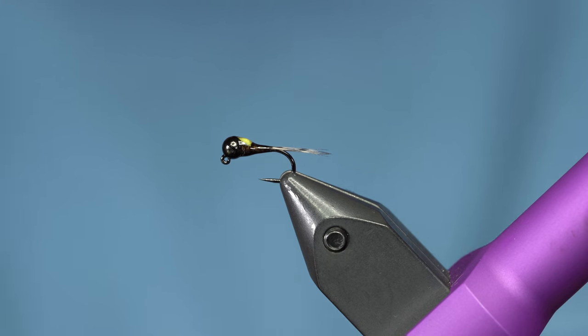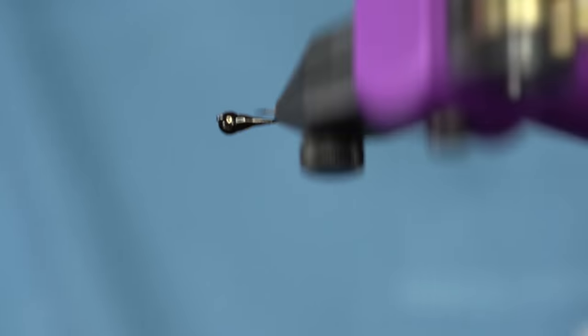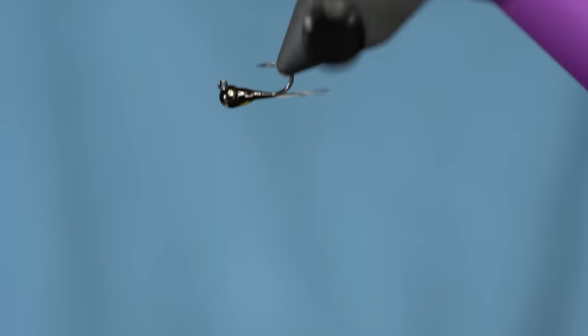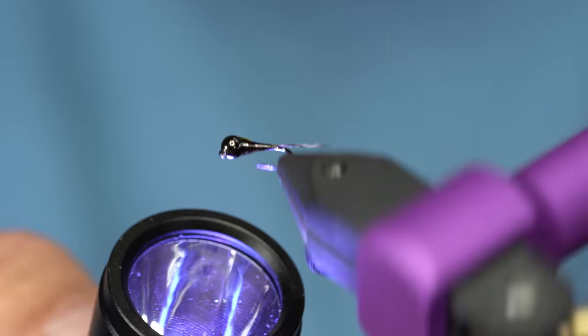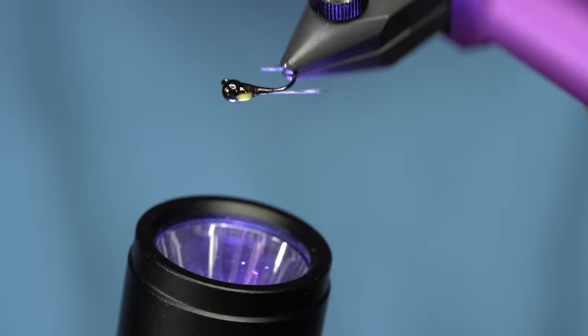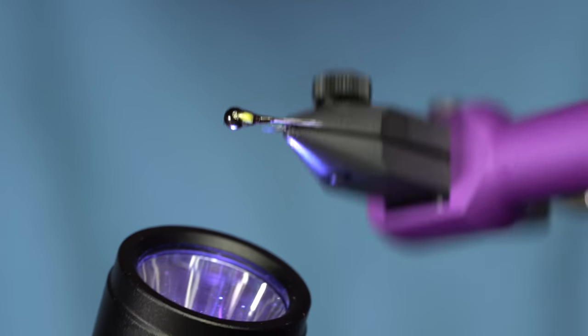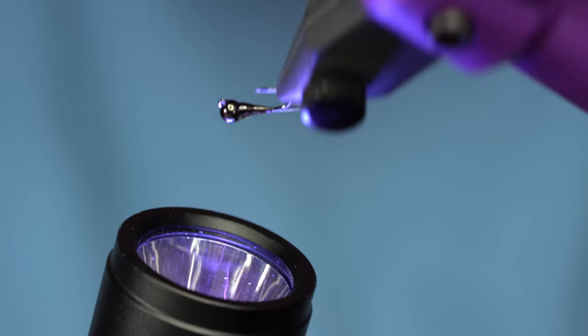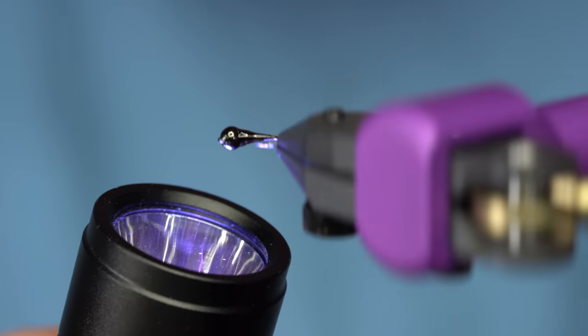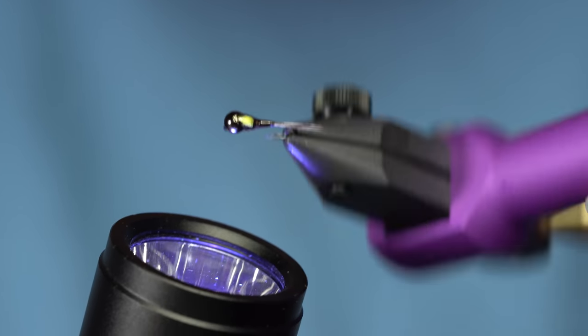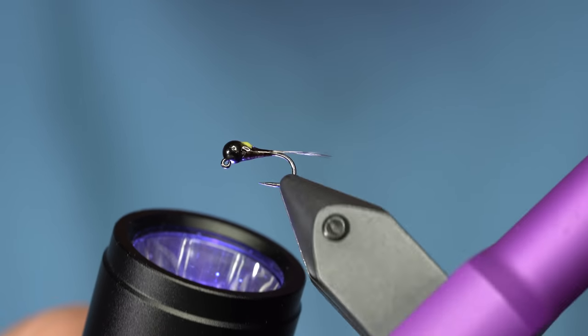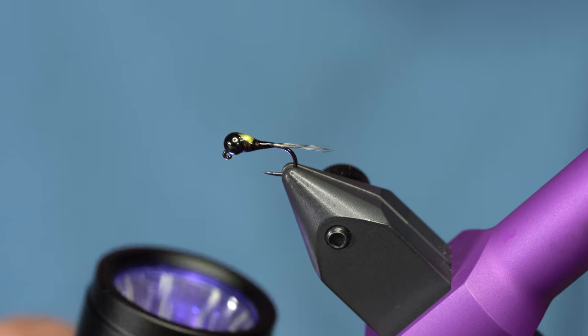So anyway, that's called the Code Cracker PMD and I'll cure it up. And the cool thing about this is you can use a bunch of different colors of foam. Like Josh here likes chartreuse. Some people like white. I even tied some with pink. So tie them up and give them a shot.